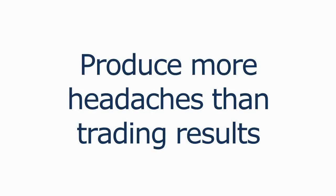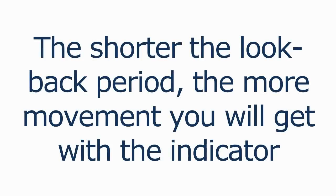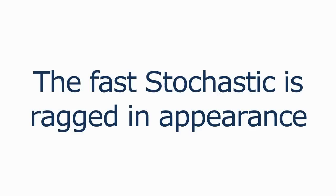Many trading indicators will give you the opportunity to adjust the inputs used in the calculation. This can be a good thing when trying to optimize for current market conditions, but it can produce more headaches than trading results. If 4, 3, and 3 is a great setting, why not 13? What about 5, 3, and 3? Just keep in mind that the shorter the lookback period, the more movement you're going to get with the indicator. A setting of 14 will be slower than a five. Whatever you determine works for you, just be consistent with it. One of the reasons I prefer the slow stochastic is that I find it plots smoother on the charts.